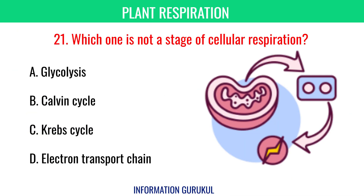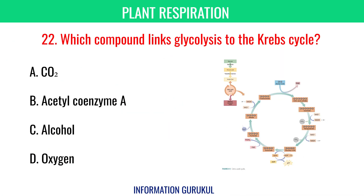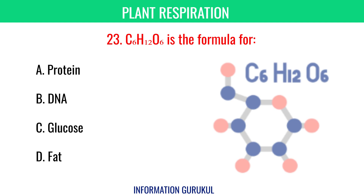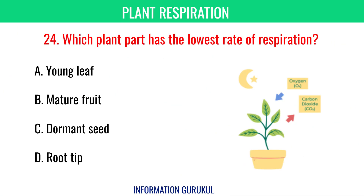Which one is not a stage of cellular respiration? Calvin cycle. Which compound links glycolysis to the Krebs cycle? Acetyl coenzyme A. C6H12O6 is the formula for glucose. Which plant part has the lowest rate of respiration? Dormant seed.